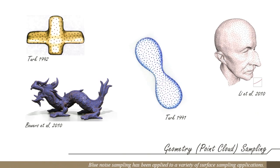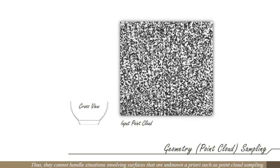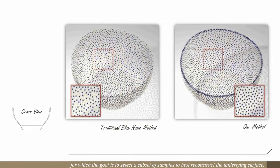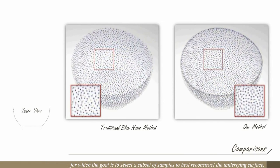Blue noise sampling has been applied to a variety of surface sampling applications. However, prior methods assume given surfaces. Thus, they cannot handle situations involving surfaces that are unknown a priori, such as point cloud sampling, for which the goal is to select a subset of samples to best reconstruct the underlying surface.